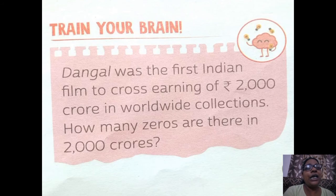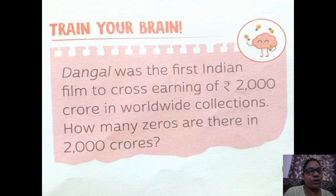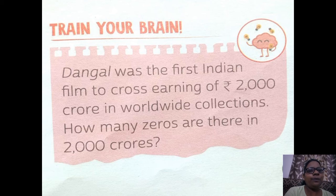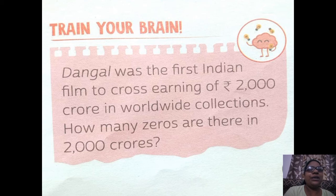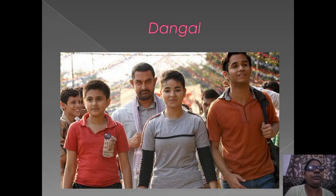Train your brain: Dangal was the first Indian film to cross earnings of 2,000 crore in worldwide collections. Can you tell how many zeros are there in 2,000 crores? There are 10 zeros. This movie's name is Dangal.